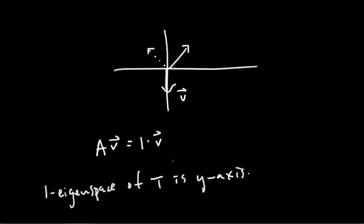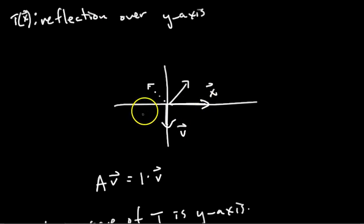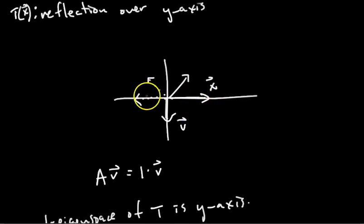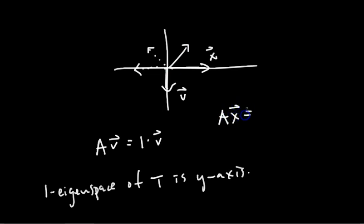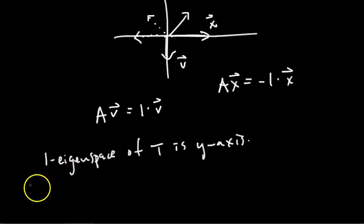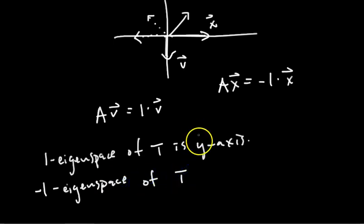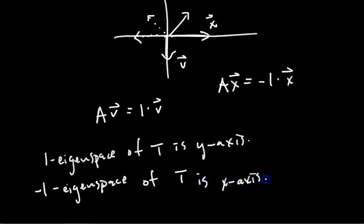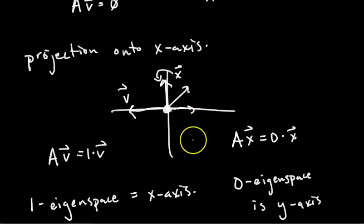Are there other eigenvectors? Yes — anything on the x-axis. When a vector on the x-axis is reflected over the y-axis, it flips to the opposite side. So A times x equals negative one times x. The negative-one eigenspace of this transformation — or of the standard matrix A — is the x-axis.